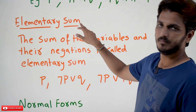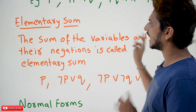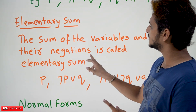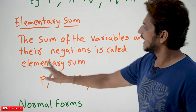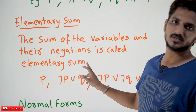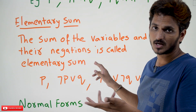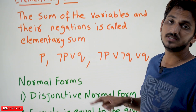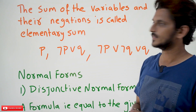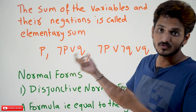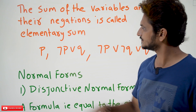Elementary sum: the sum of the variables and their negations in a given formula is called elementary sum. If a formula contains sum — here sum means disjunction — the formula contains disjunction of the variables, then we call it as elementary sum.